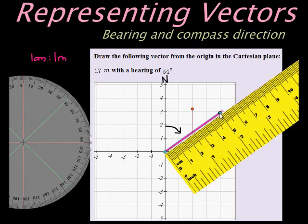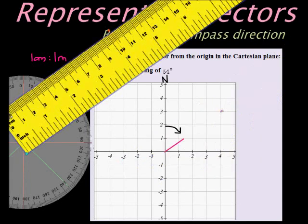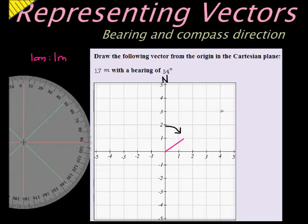So here I go. I'm going to put, that's 1.7 is about there. So I'm going to bring it down to about there. 1.7 is about there, and I'm happy with that. Now I just simply make my arrowhead, since it's in that direction. There we go.